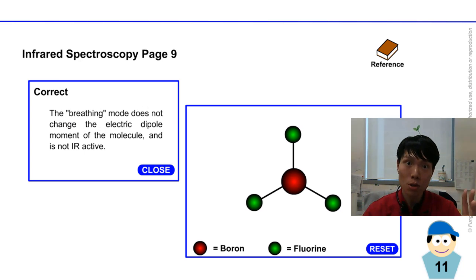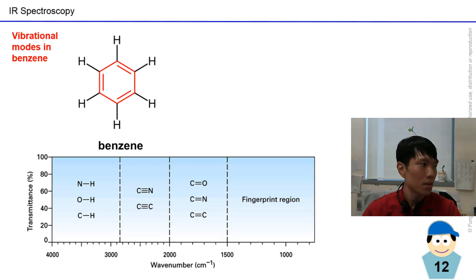That means for borane you see three peaks, three signals. Now in this case for the vibrational modes of benzene, what will we see over here?